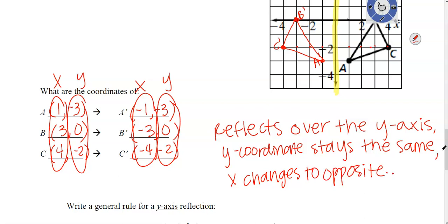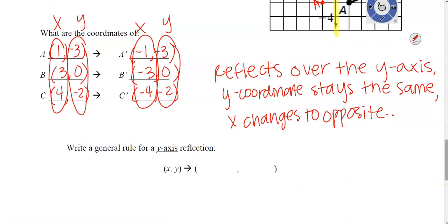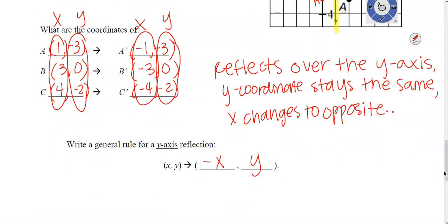To summarize the rule: reflecting over the x-axis — x coordinate stays the same, y changes to the opposite. Reflecting over the y-axis — y coordinate stays the same, x changes to the opposite. For the y-axis rule, we write opposite x (−x) and y stays as y. Go ahead and practice your guided practice. If you have any questions, please message me. Have a good day!